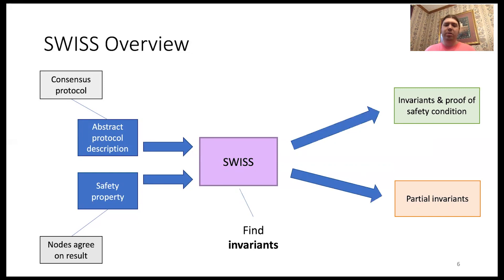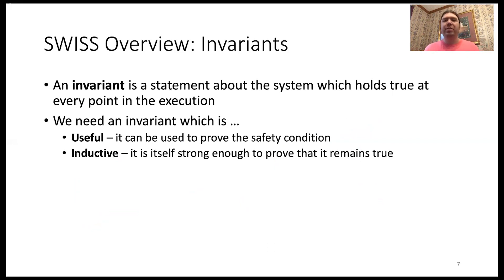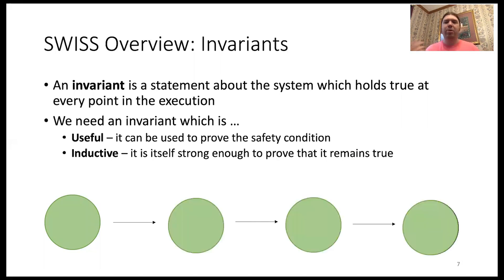Before we dive into the internals of SWISS, I'll briefly tell you about what invariants are. An invariant is a statement about the distributed system which holds true at every point in its execution. We need the invariant to be useful — it must help us prove the safety condition we're interested in — and we need it to be inductive. We're going to model the distributed system as a state machine, and since the invariant is inductive, we can use the fact that it holds at one state to show it holds at the next state, and then by induction it will hold at all points in time.